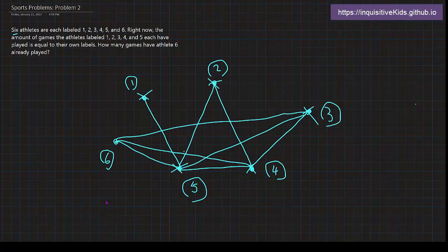So, now for number 6, let's count how many lines are coming out from athlete number 6. 1, 2, 3. So, how many games has athlete 6 already played? 3 games.